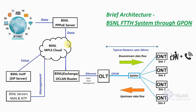The data traffic — or internet traffic — is further moved to BSNL's PPPoE server. This server does the username and password authentication for the internet data provided to the end customer. Internet data is provided on a username-password authentication system. This server carries out the authentication, and once it is successful, the user will be connected to the internet.